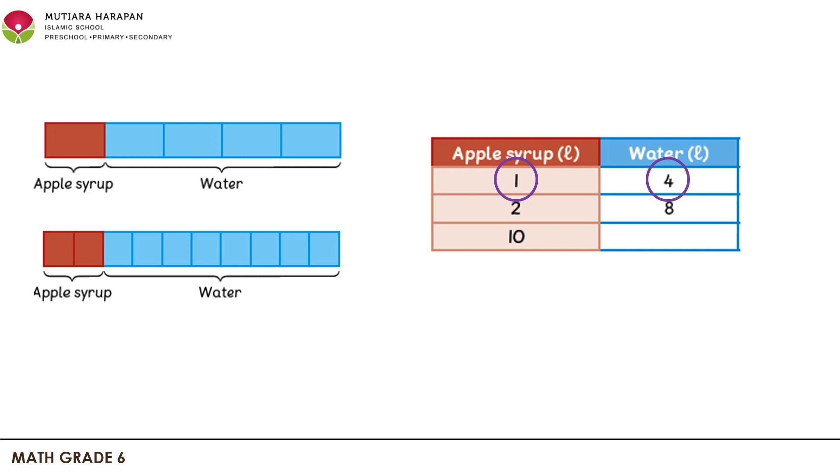From the first row to the second row, we multiply it by 2. For the third row, so that 1 can become 10, we multiply it by 10. So for the empty column, we calculate 4 times 10.